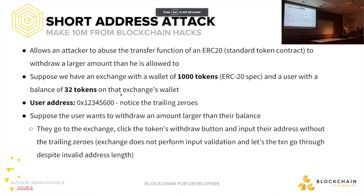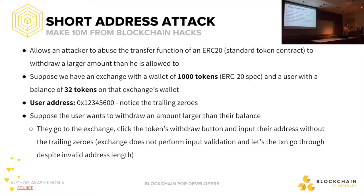The next attack is the short address attack. There's something called the ERC20 standard token contract that people use as a spec for building ICOs and tokens. All this attack does is allow you to withdraw a larger amount than you're actually allowed to. Suppose we have an exchange with 1000 tokens and the user has 32 tokens. The user address is 0x12345600 — keep an eye on the trailing zeros.